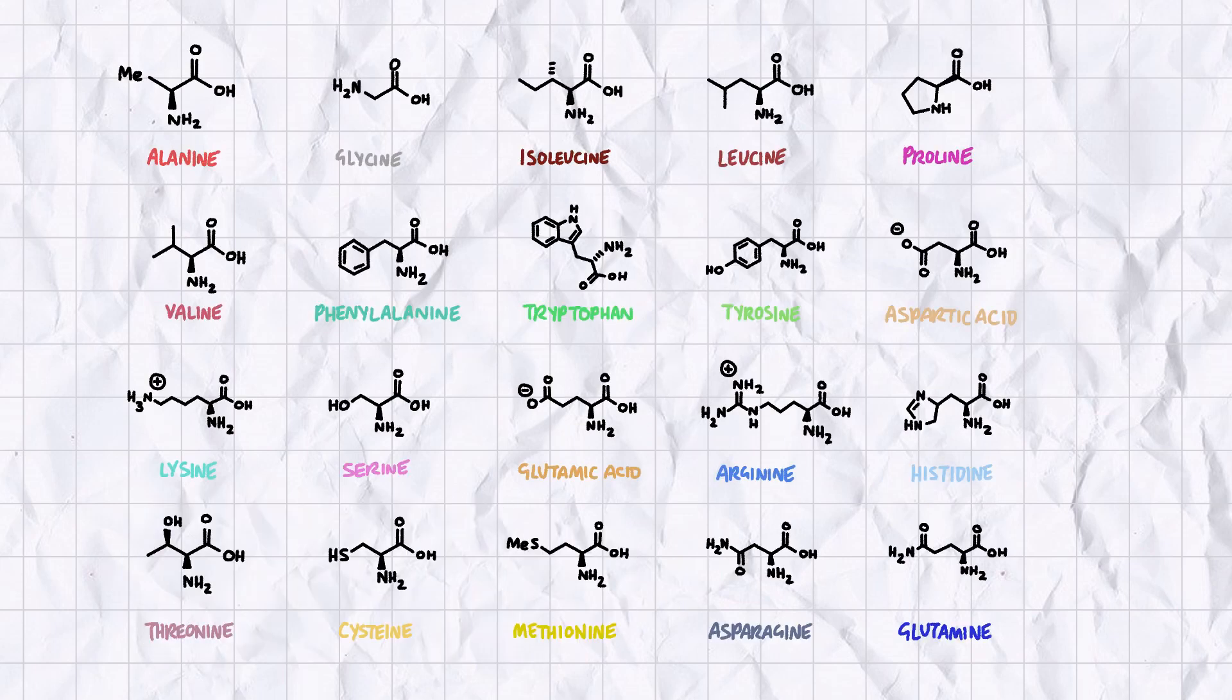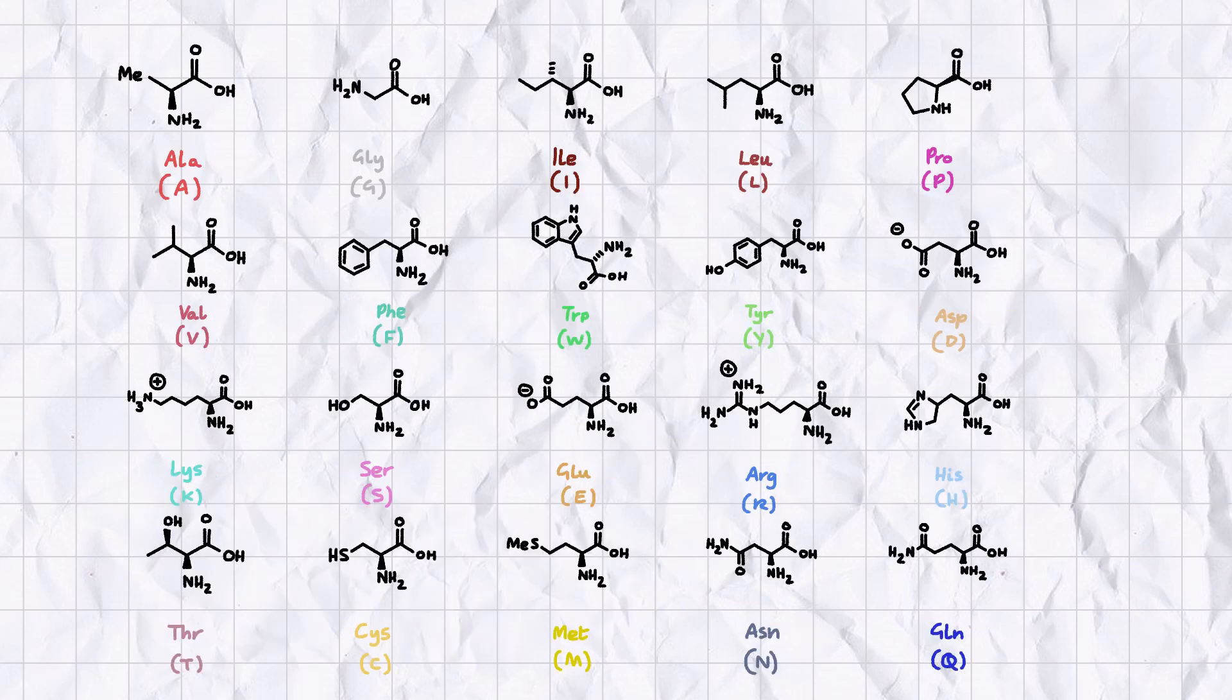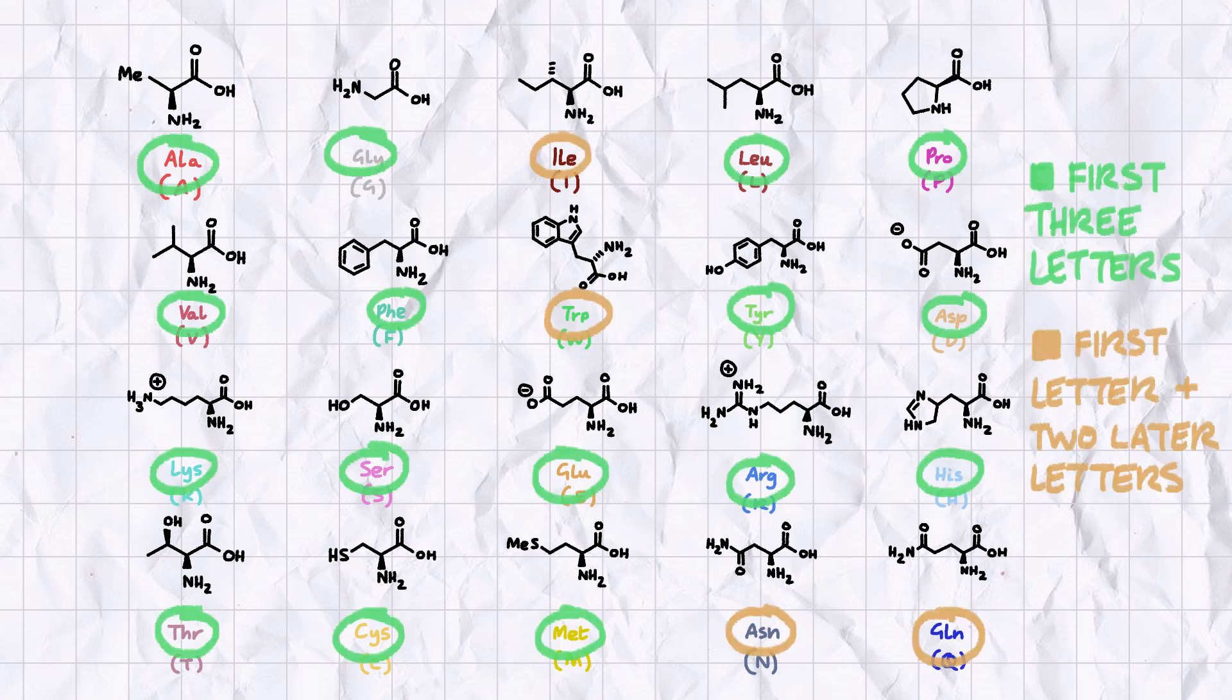When writing papers, biochemists will often abbreviate the names of the standard amino acids to save space. Sometimes with three letters, sometimes with one. Not to fear though, the three letter abbreviations are fairly straightforward and I'm sure the same applies to the one letter ones.